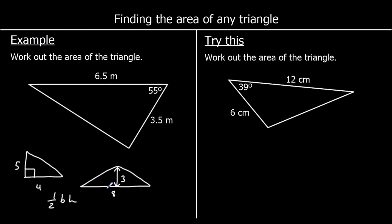But when we don't have this information, we are going to use a different formula. The area of a triangle can be found using half AB sin C. So half AB sin C will work out the area of a triangle.